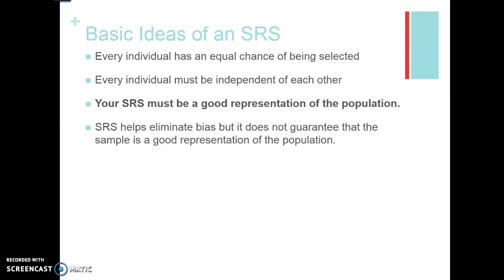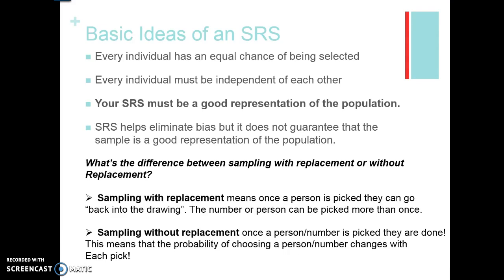By choosing random individuals, we hope to get a sample that is similar to the population and helps eliminate bias — reducing an overestimate or underestimate. However, a simple random sample does not guarantee it completely gets rid of bias and doesn't always guarantee a good representation of the population. Since it's completely done by chance, you could end up getting everyone with five or more computers just by chance alone.